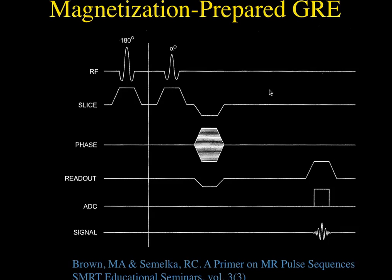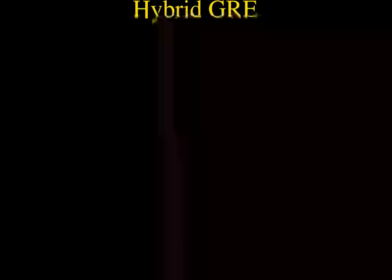Magnetization-prepared gradient echo — you can do the same thing as getting a STIR image or a FLAIR image with gradient echo: give a 180-degree pulse beforehand, wait a TI time, then give the alpha pulse with phase encoding into a gradient reversal and get an echo.